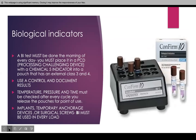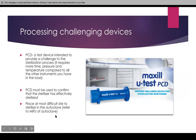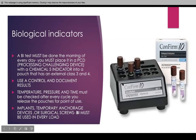Biological indicators are these little tubes — these are just pictures to give an example, it's not the exact same brand but something similar. They always come in tubes and they test spores — they test if anything is growing within the autoclave. A BI test must be done the morning of every day. This is the processing challenging device. We are going to place the BI in it and then place a class 5 chemical indicator.